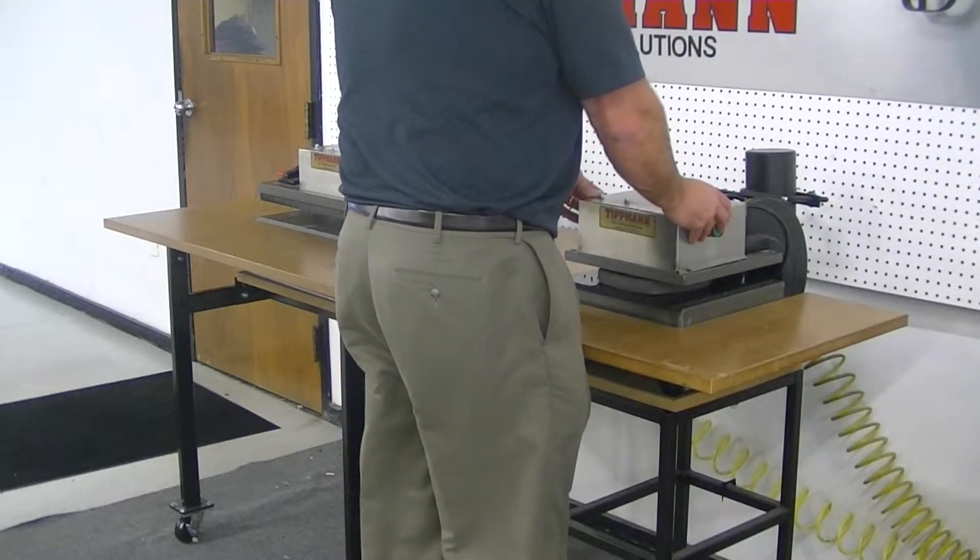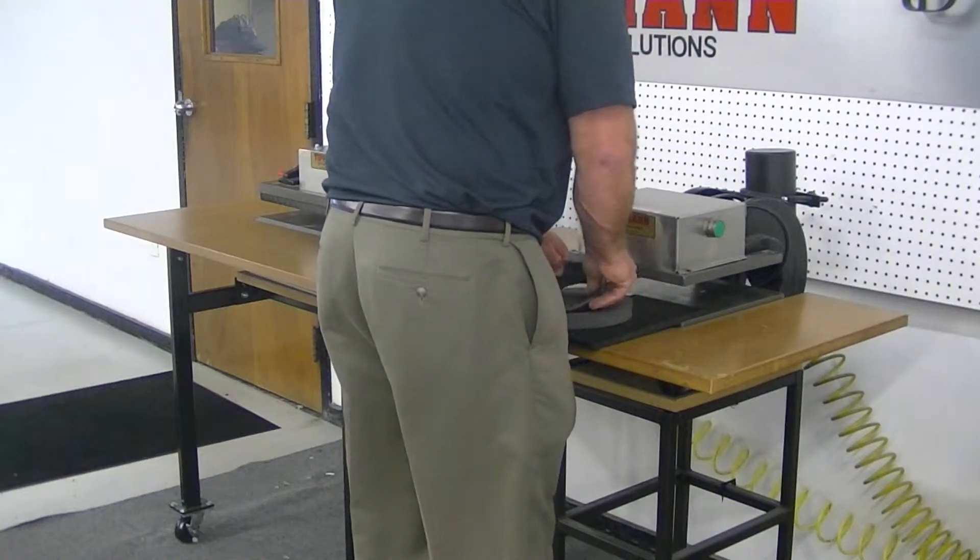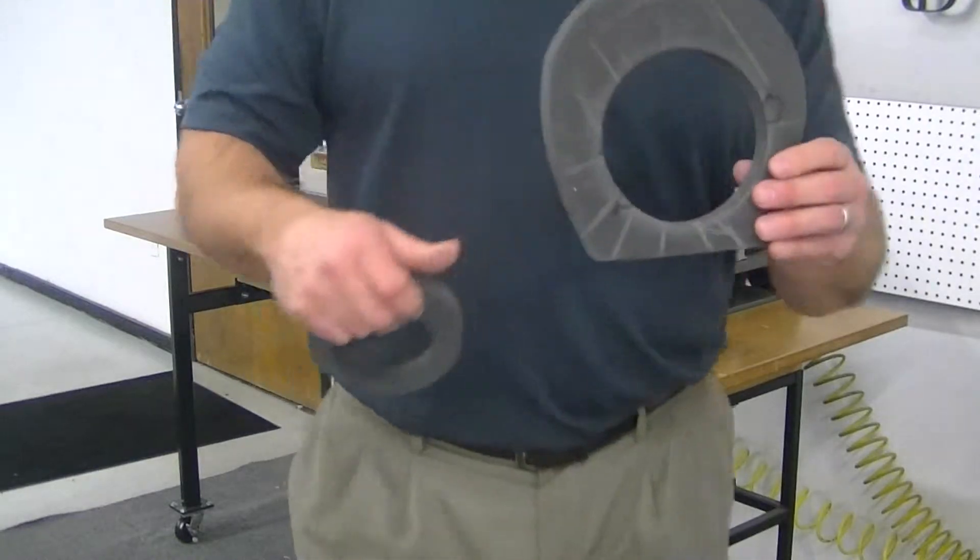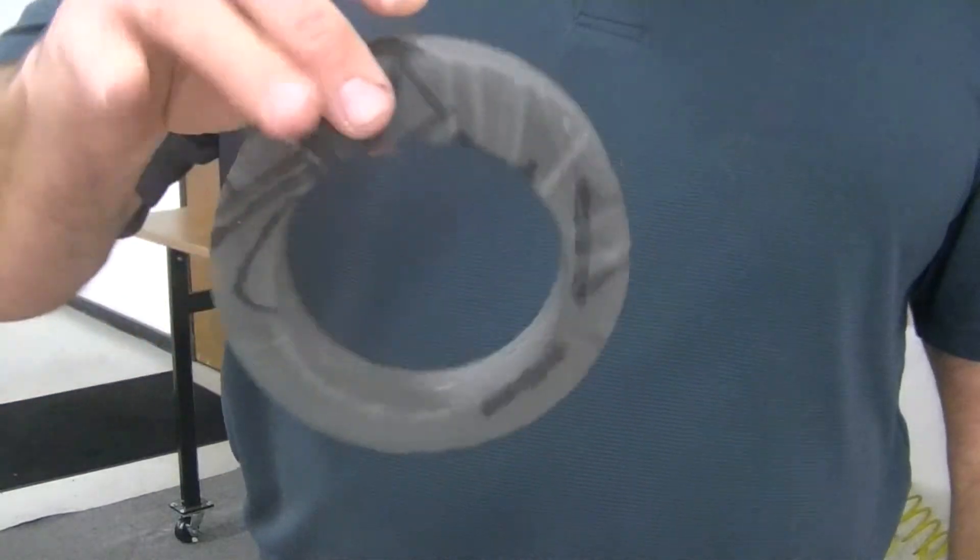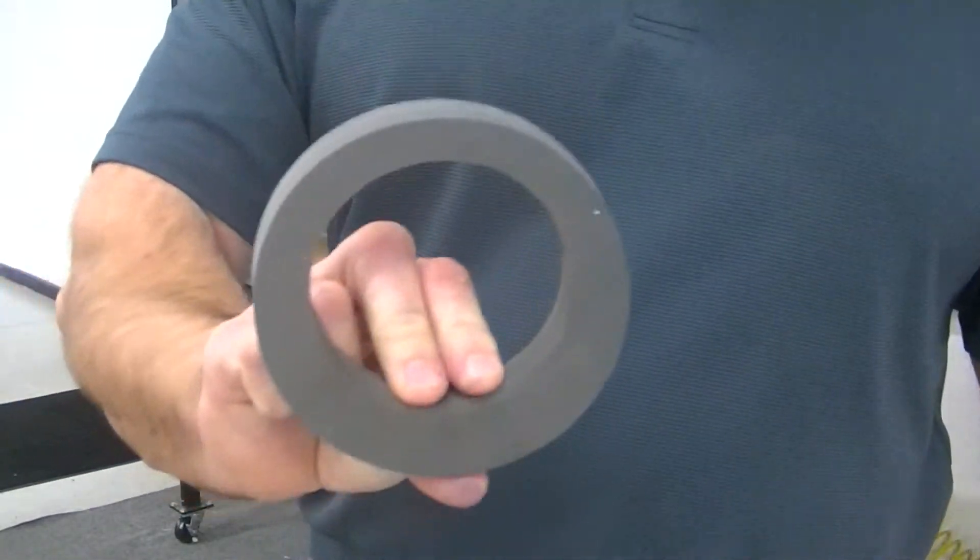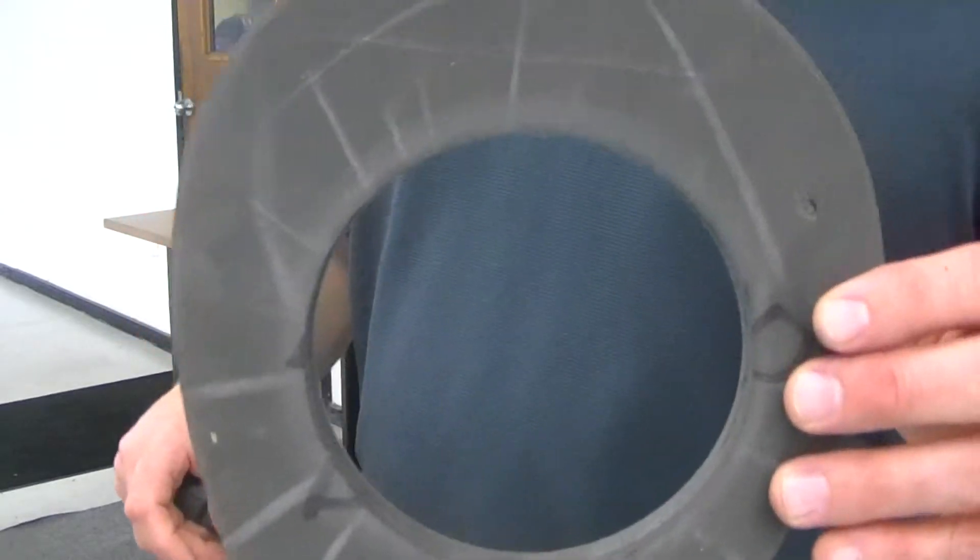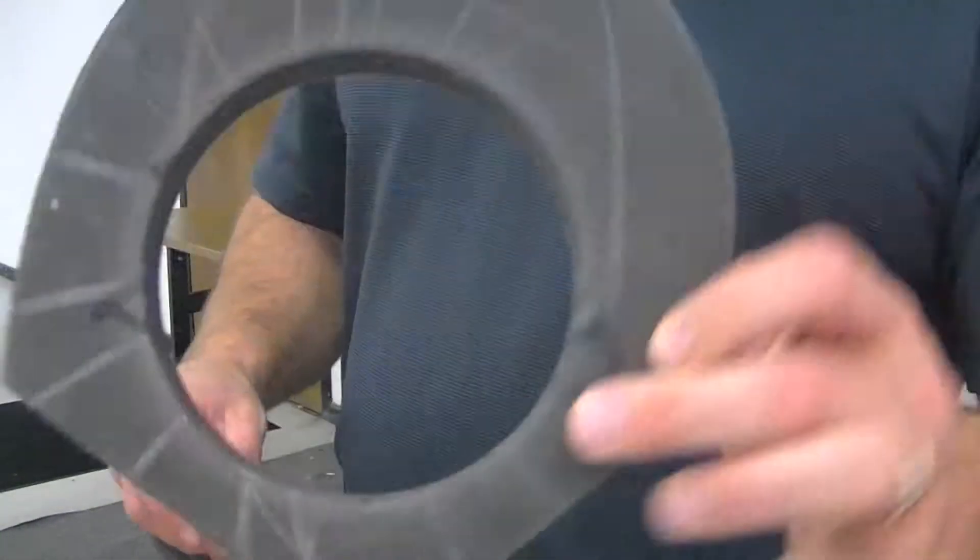So, notice we get a nice, clean cut once we do press it down in there. Again, clean cut. Now, I didn't set that circle in there equal, so it's not exactly equal from the first circle. But, you'll see we do get a nice, clean cut, very clean edges. I think you can maybe see in there, see how clean the edges are.